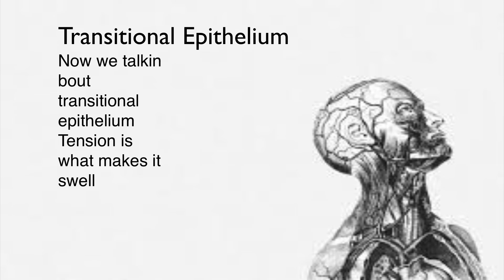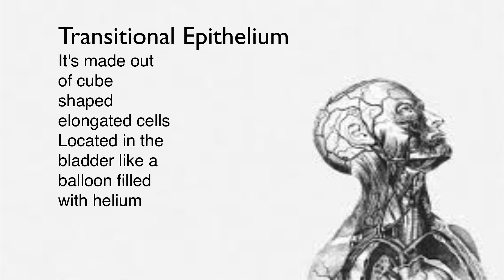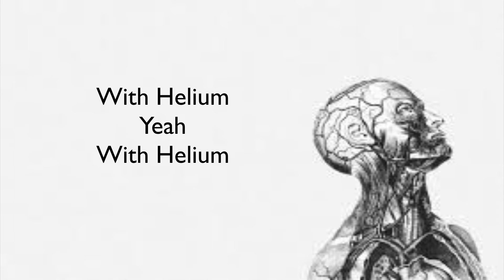Now we talking about transitional epithelium — tension is what makes it swell. It's made out of cube-shaped elongated cells. Located in the bladder, like a balloon filled with helium.